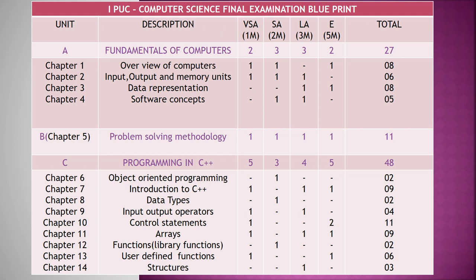In your syllabus we have four units. The units consist of one mark questions, two mark questions, three mark questions and five mark questions. The first unit is Unit A — Fundamentals of Computers — which will have one mark question: two, two mark questions: three, three mark questions: three, and five mark questions: two. This unit consists of 27 marks total.